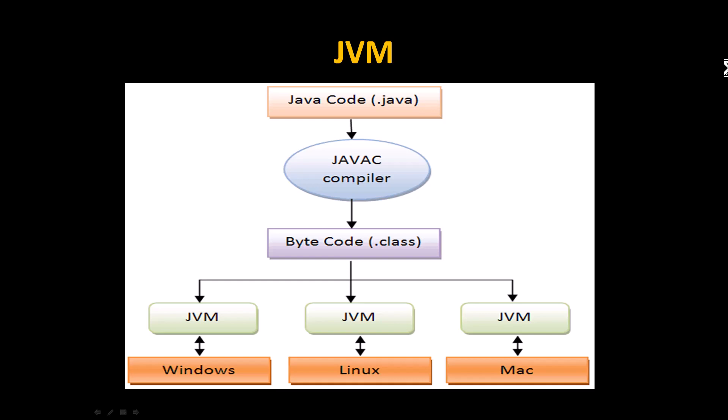JVM stands for Java Virtual Machine. When you save a file with the extension filename.java and compile it using 'javac filename.java', a bytecode or .class file is created. This class can be executed anywhere. JVM identifies which operating system you are using — for example, if you are using Windows, it interacts with the Windows library and converts to bytecode.